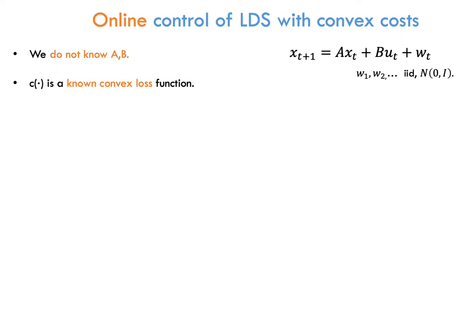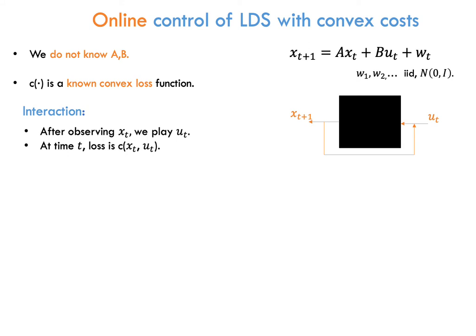Now, we are ready to describe the problem that our work is about, and which has been studied in recent years from the learning theory community. It is the problem of online control of a linear dynamical system with convex costs. Here, we don't know the system matrices A and B. So, we want to control and learn the system simultaneously. We will assume that the cost function is known. So, the system for us is a black box, and we interact with it by observing the current state x_t and then applying the control u_t. When we do this, we pay the corresponding cost.